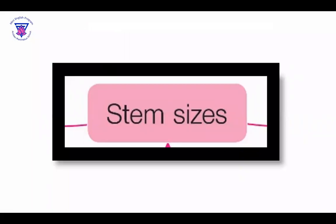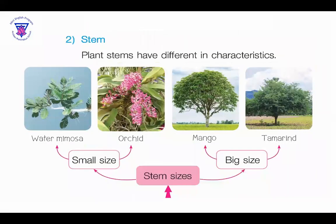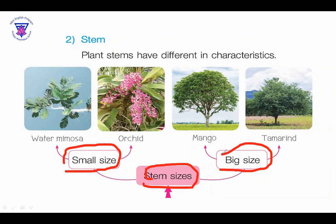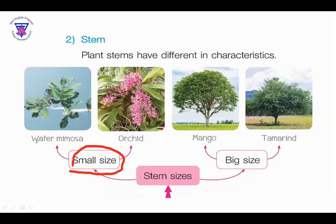So, this is the STEM sizes. Plant STEMs have different characteristics. Look at this picture. In STEM sizes, we have a small size and we also have a big size. In the small size, we have the water mimosa. The second one is the orchid.